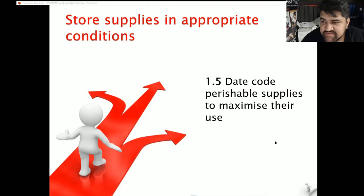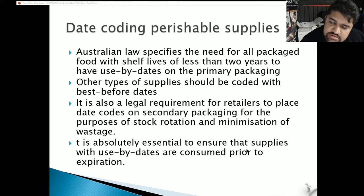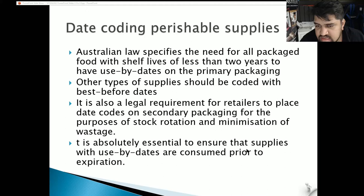1.5: Date code perishable supplies to maximize their use. Australian law specifies that all packaged food with shelf lives of less than two years must have use-by dates on primary packaging. Other types of supplies should be coded with best-before dates. It is also a legal requirement for retailers to place date codes on secondary packaging for stock rotation and minimization of wastage. It is absolutely essential to ensure that supplies with use-by dates are consumed prior to expiration.